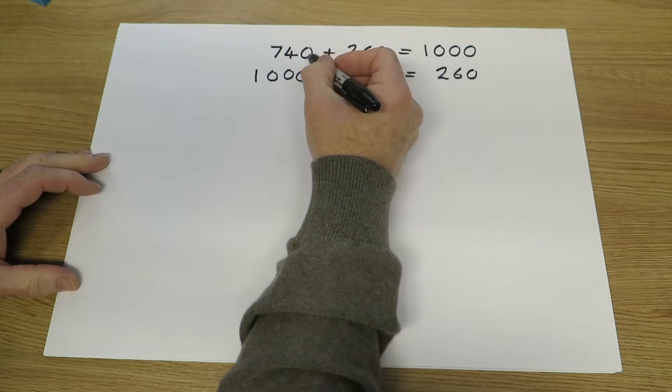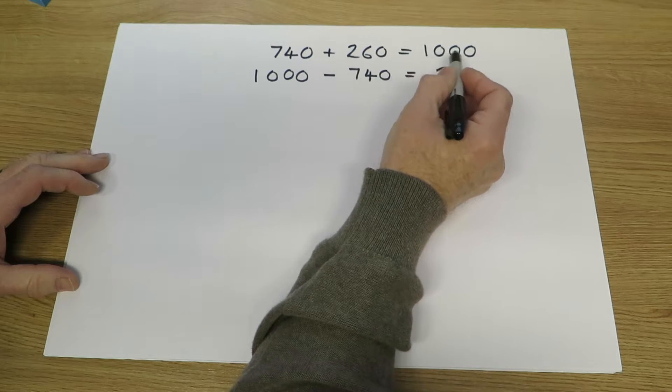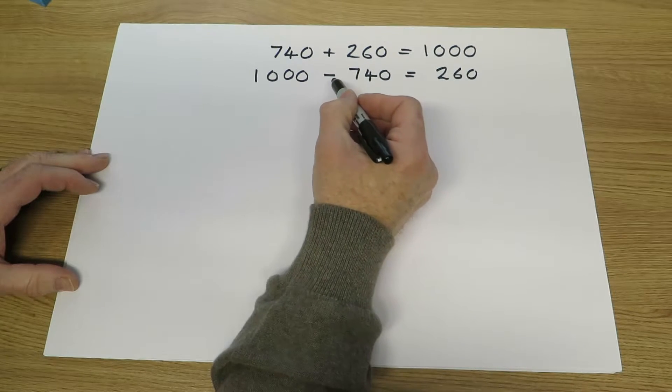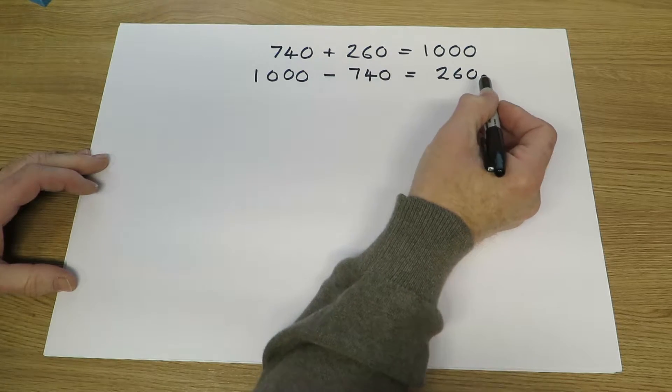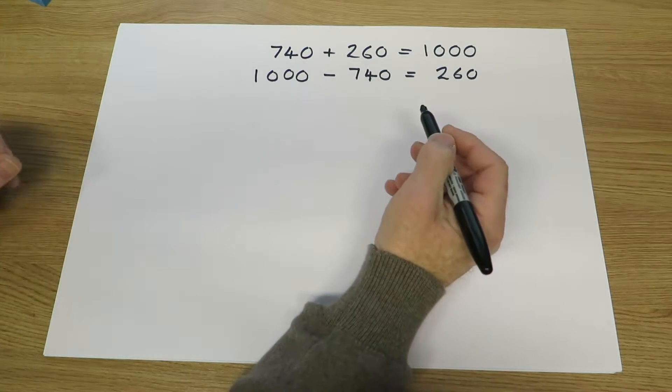So for example, because 740 plus 260 equals 1000, then 1000 subtract 740 must be equal to 260. They are inverse operations.